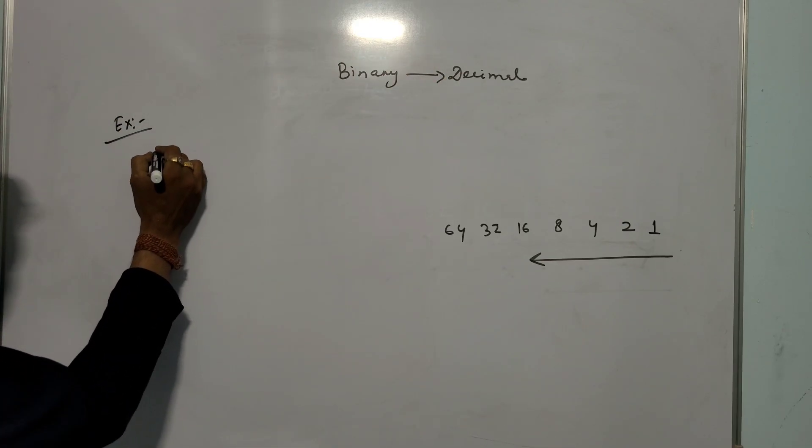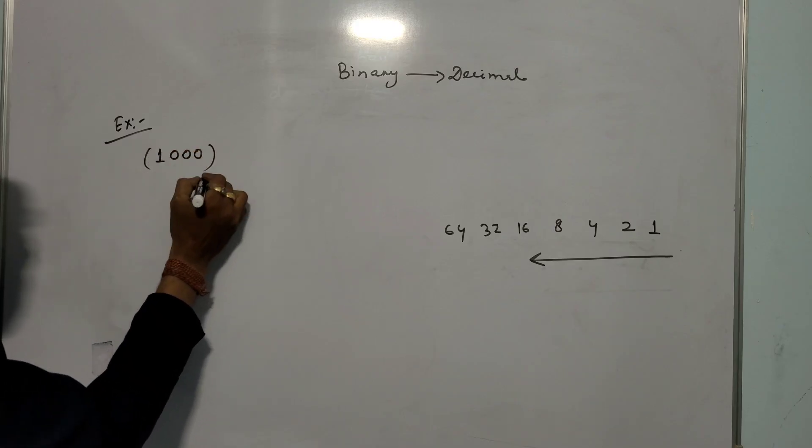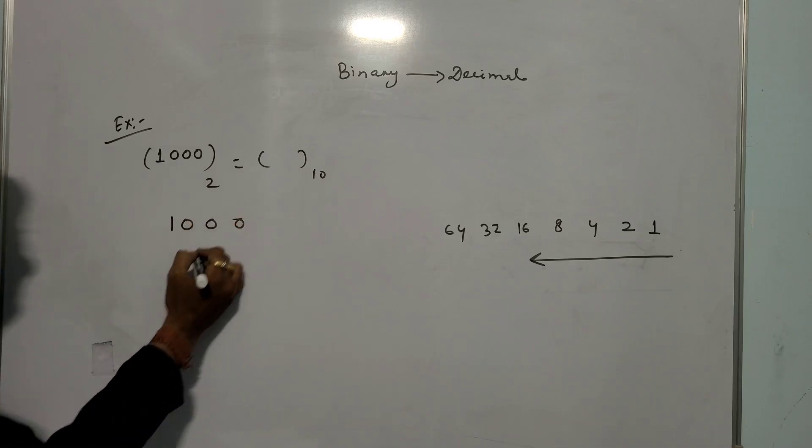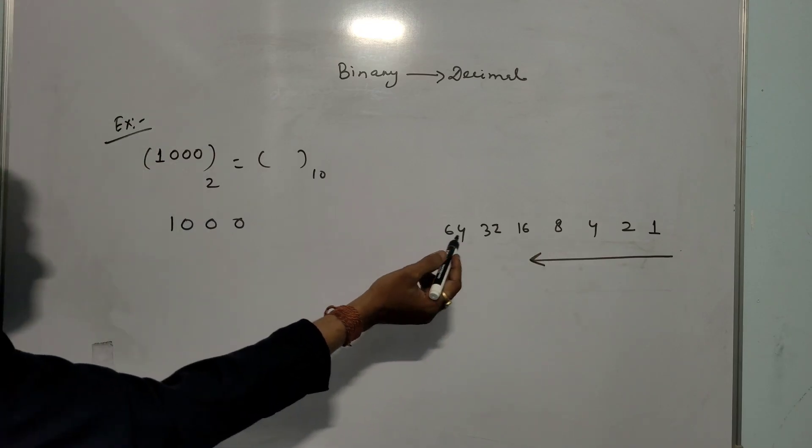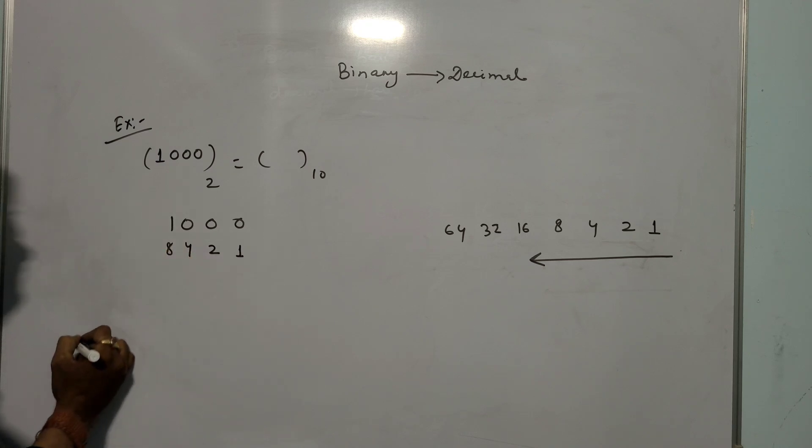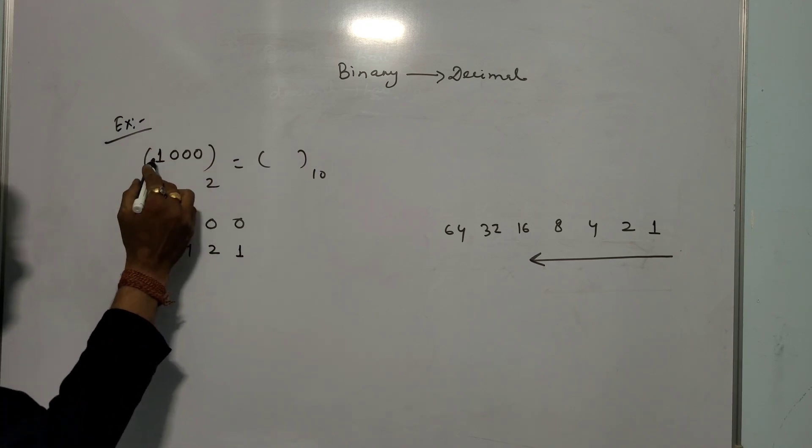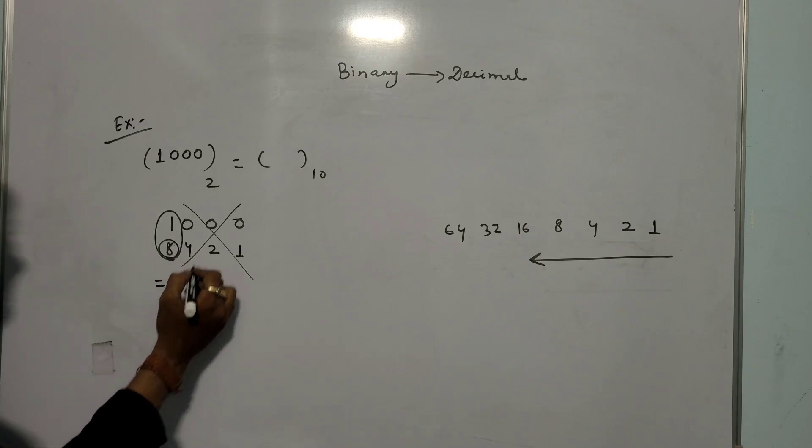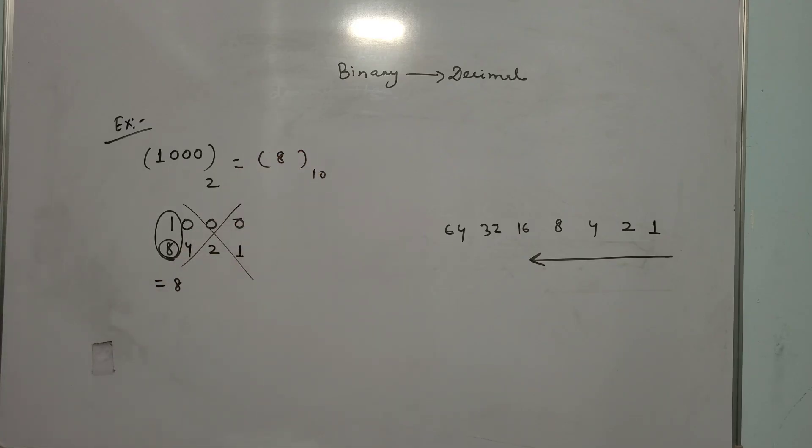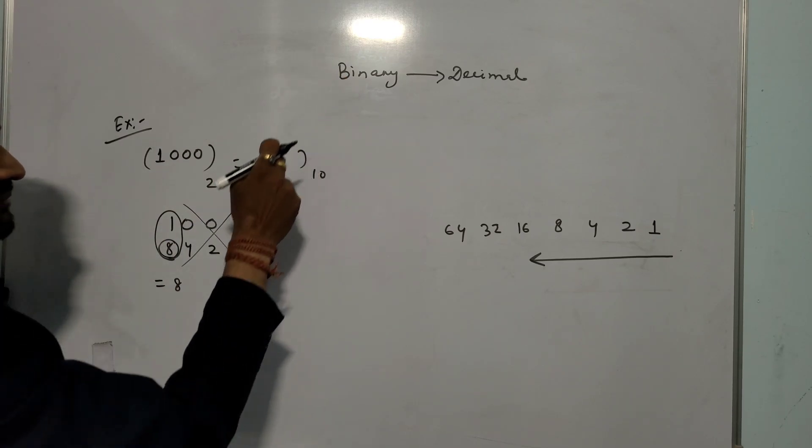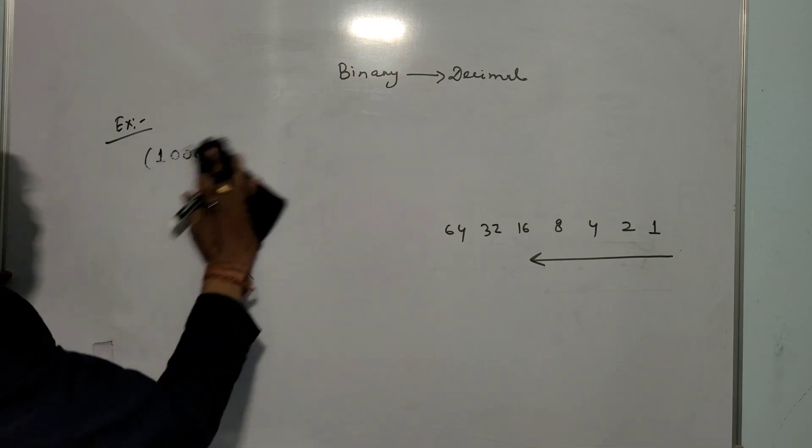Binary to decimal. Let we have a number 1000 and you need to convert from binary to decimal. How? First you write that number. And you write this one from right to left: 1, then 2, then 4, then 8. Next, see the question: 1000. Where 0 is, cross it. Only what is left? 1 is left. 1 corresponding value is 8. So answer is 8. 1000 in binary form equals 8 in decimal.